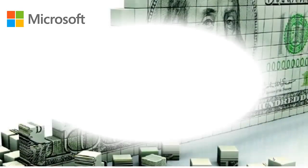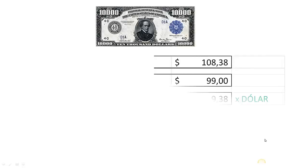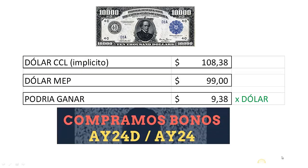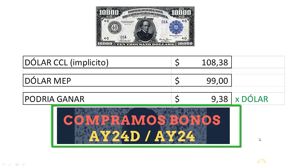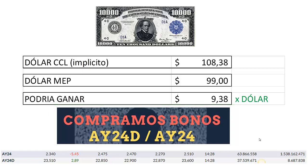¿Por qué? Si puedo vender mi CDR a primera hora, y teniendo pesos ya depositados en una cuenta comitente, podría ganar 9 pesos con 38 comprando bonos en contado inmediato que coticen en pesos y dólares, como el Bonar 2024, que me permite comprar bonos en pesos y revenderlos a cambio de dólares físicos que se depositan de inmediato en la cuenta comitente.